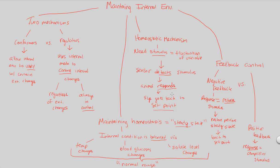So that gives us our negative feedback and positive feedback — this is how we maintain the internal environment. For positive feedback, take a look at figure 40.8. This now gives us a nice segue into our look at hormones.